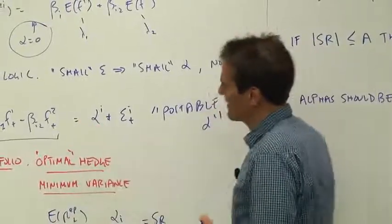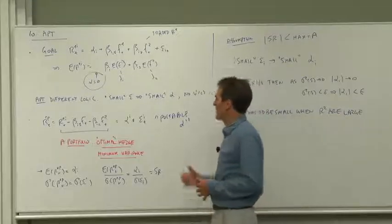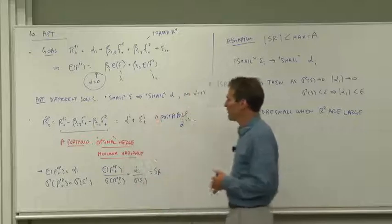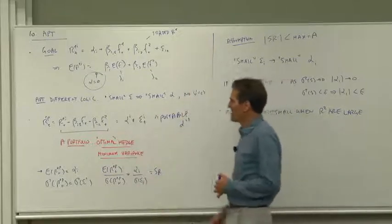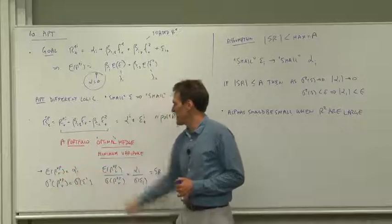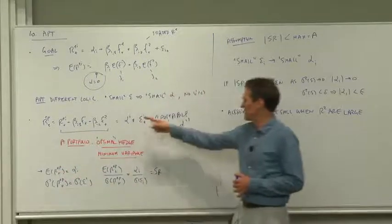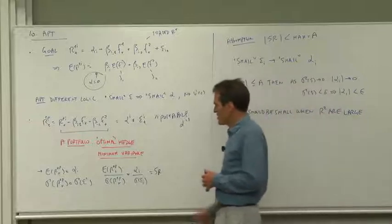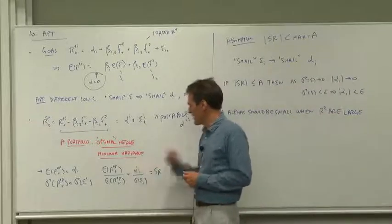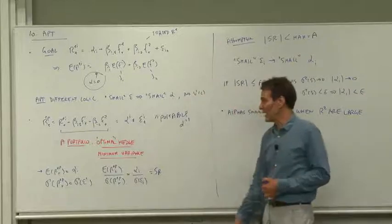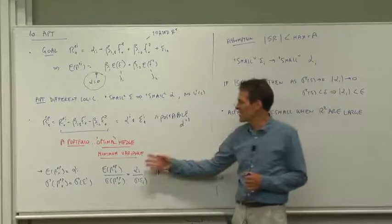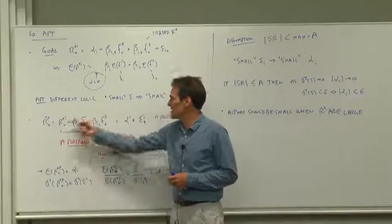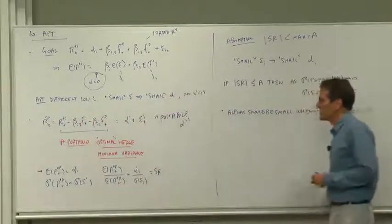So having done that, having formed the optimal hedge portfolio, having formed the portable alpha portfolio, what do we have? The rate of return on your portfolio, the mean return on the portfolio is alpha. The standard deviation of the portfolio return is the standard deviation of the epsilon. So the Sharpe ratio of the portfolio is alpha over sigma of epsilon, a natural thing to do if you're thinking of exploiting this opportunity and shorting out the factor risks.